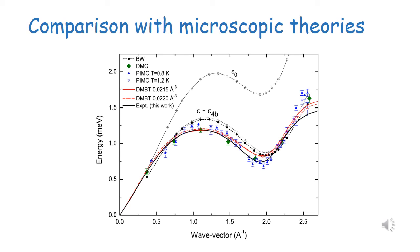We can also compare our measured dispersion curve, represented here with a thick black line, to theoretical calculations of the dispersion curve, starting from the original Feynman curve, here at the top of the graph, and then more recent calculations by diffusion Monte Carlo, path integral Monte Carlo, and dynamic many-body theory, which is a microscopic theory.